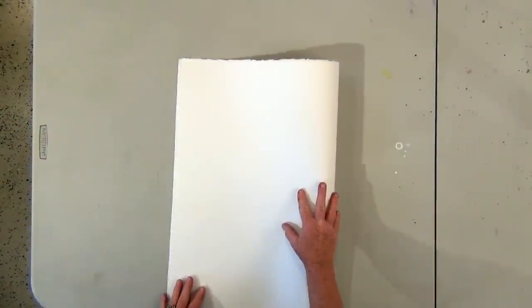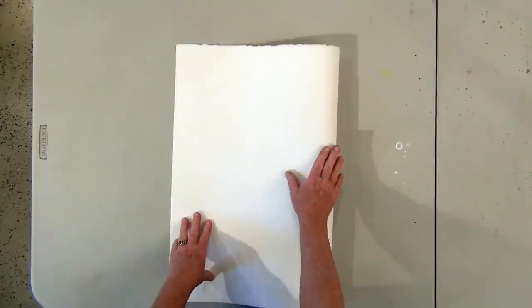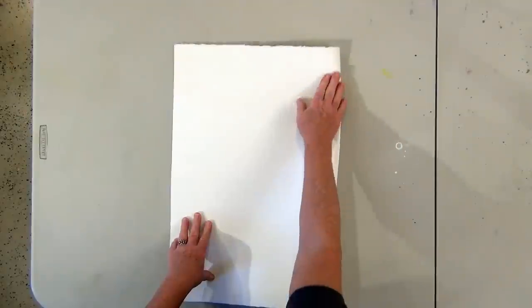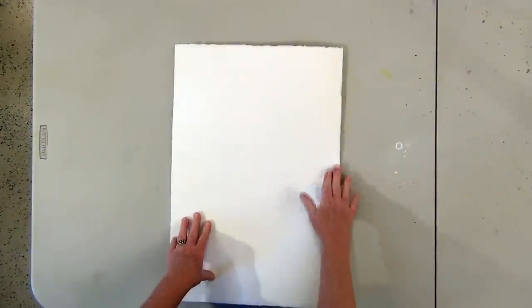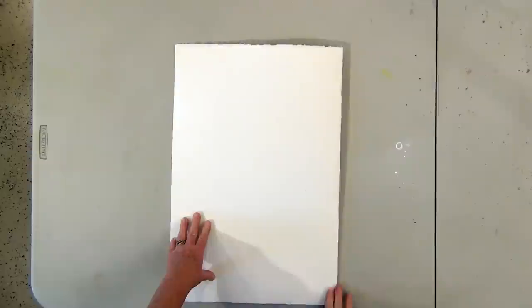This is a full sheet of 140 pound Arches cold press paper. I fold it in half and then press the fold so that it lays flat.